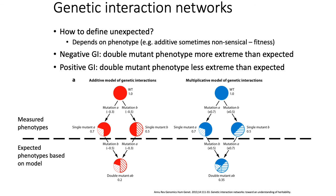The additive and multiplicative models don't always agree with each other, and how you decide which model to pick depends on what phenotype you're looking at. For some phenotypes, the additive model doesn't make sense. For example, with cell viability where 1.0 means fully viable and 0.0 means dead, if two mutations each have an individual effect of negative 0.9, the additive expected double mutant phenotype would be negative 0.8 — which doesn't have a meaningful interpretation.